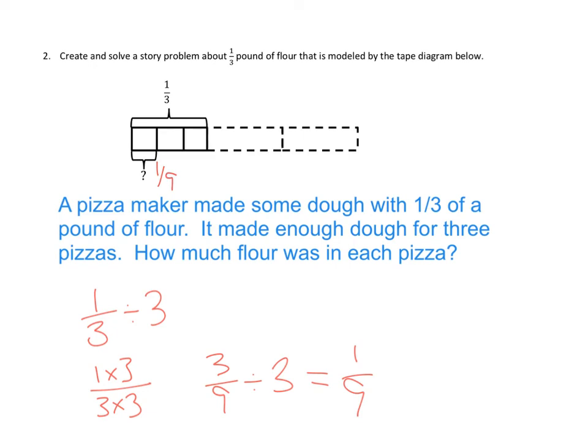Each pizza would have one ninth pound of flour. So we have created and solved the story problem about one third of a pound of flour that is modeled by the tape diagram below, where the one third was itself then divided into three more spots.